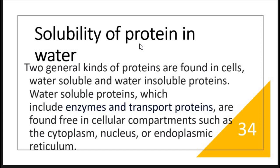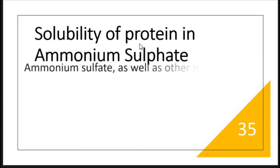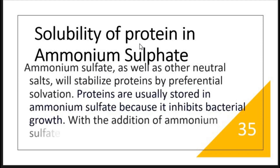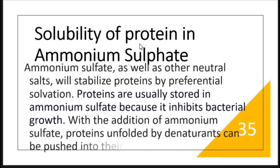Water-soluble proteins include enzymes and transport proteins, found freely in cellular compartments like the cytoplasm, nucleus, and endoplasmic reticulum. Many enzymatic reactions involve soluble proteins. Ammonium sulfate is a neutral salt commonly used to stabilize and store proteins because it inhibits bacterial growth. With the addition of ammonium sulfate, proteins can be stabilized and pushed into their native configuration.